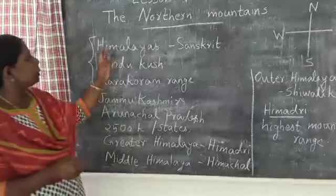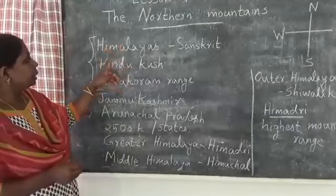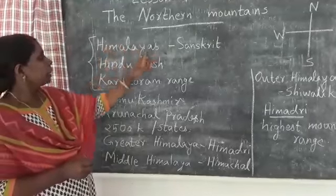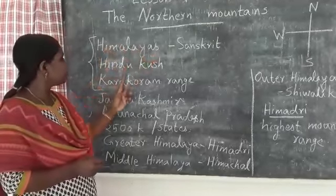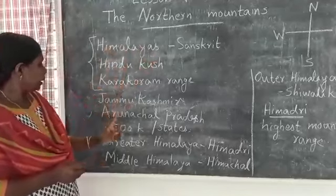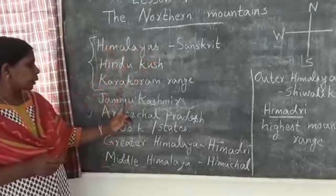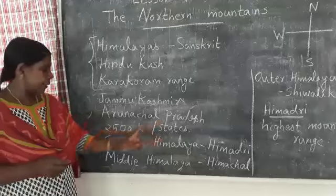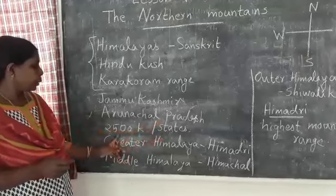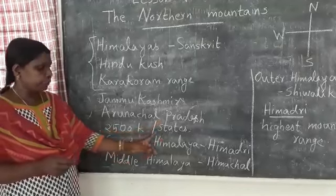What have we studied today? Himalaya — the northern mountain range. It has three ranges, and it extends from Jammu and Kashmir to Arunachal Pradesh, about 2500 km.